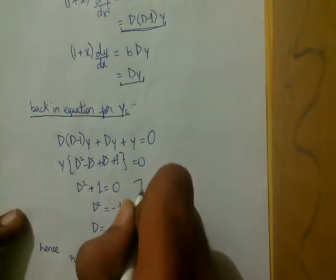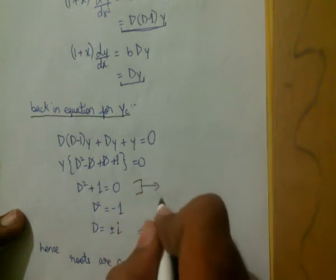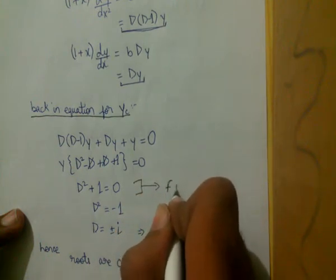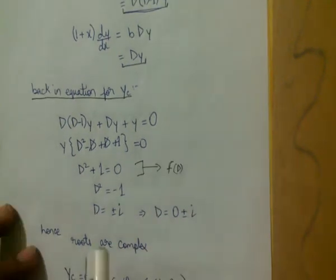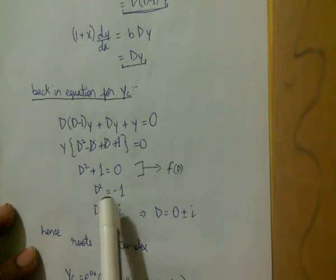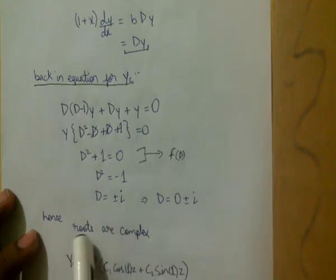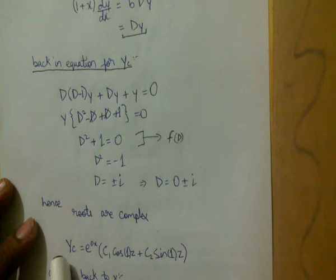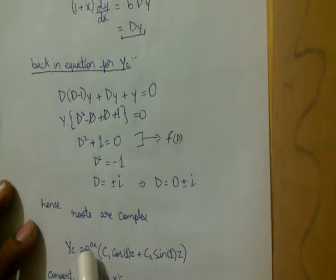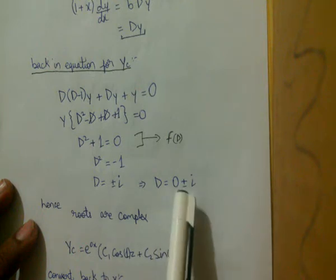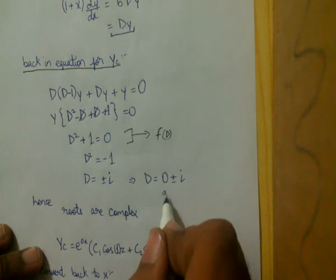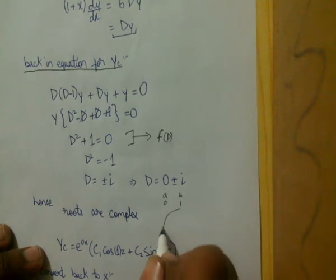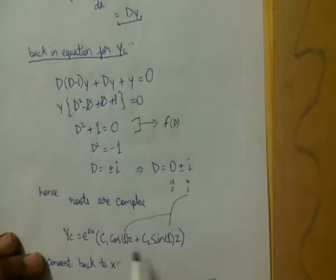This is the auxiliary equation as a function of D. From D² + 1 = 0, we get D² = −1, so D = ±i. The roots are complex. Therefore yc = e^(0·z)·(c1·cos z + c2·sin z), where α = 0 and β = 1, giving yc = c1·cos z + c2·sin z.